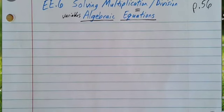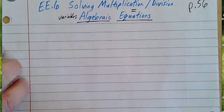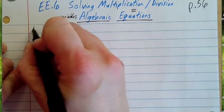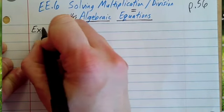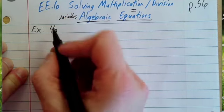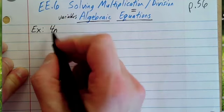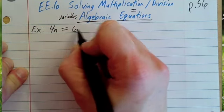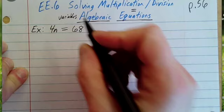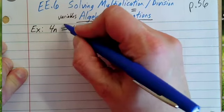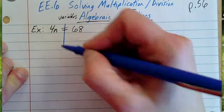I'm going to write the example in black, and when I change the problem I will use blue. The first example is 4 next to an n, which means 4 times n equals 68. Just like with addition and subtraction, we draw a line down the equal sign.